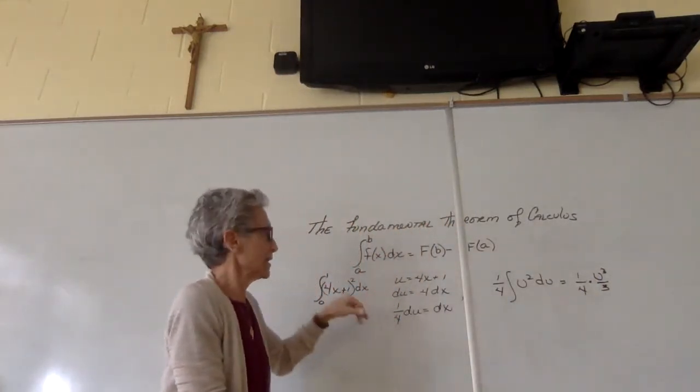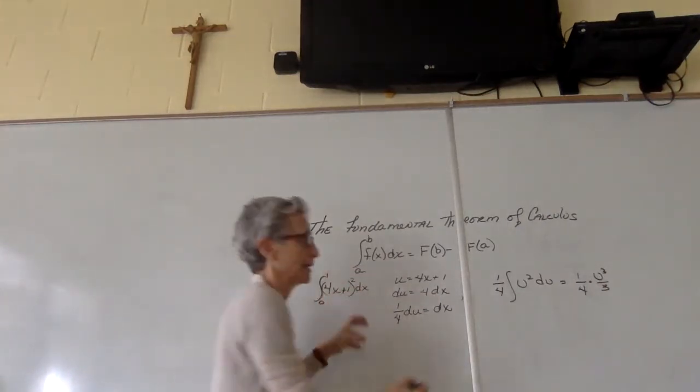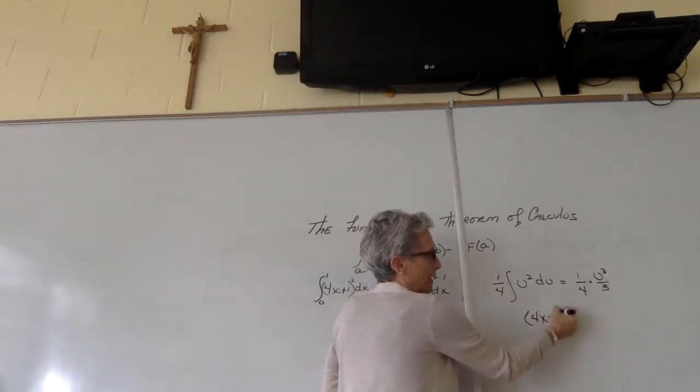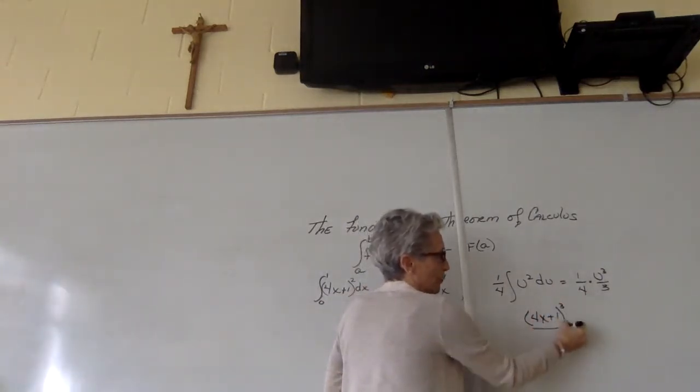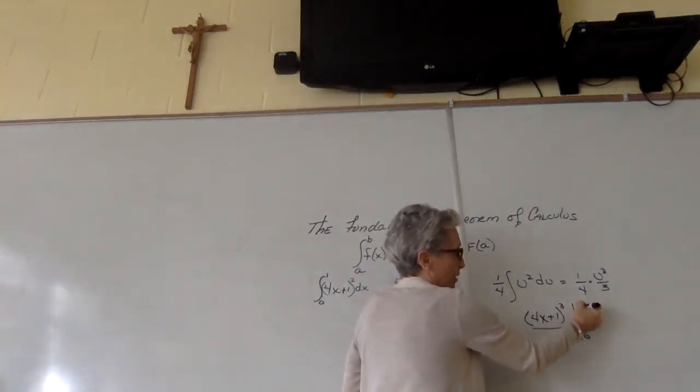you want to replace u with what it's equal to before you plug in the numbers. So instead of u cubed over 12, you have 4x plus 1 cubed over 12, and it's going from 0 to 1.